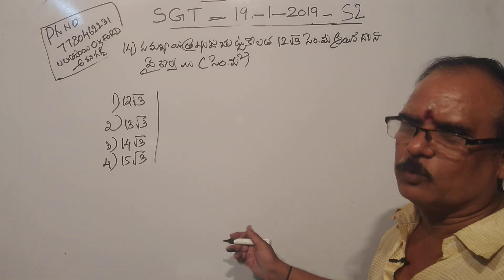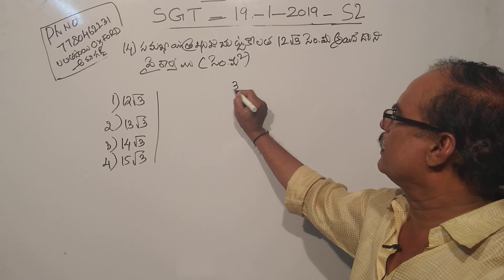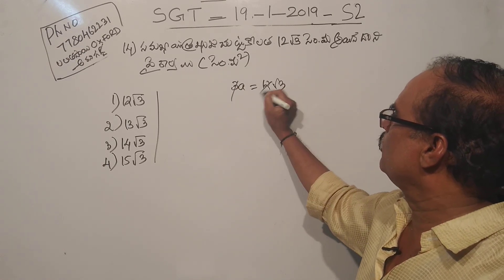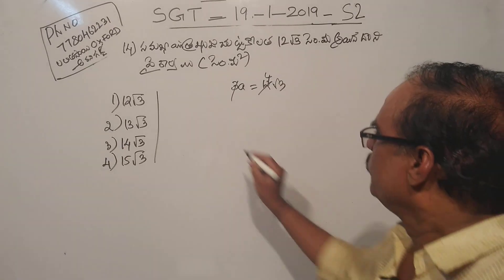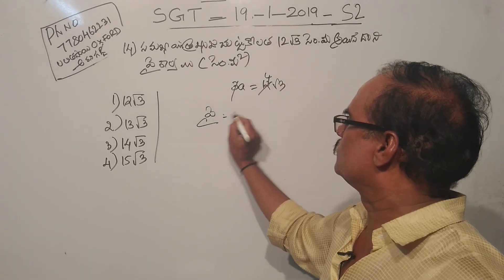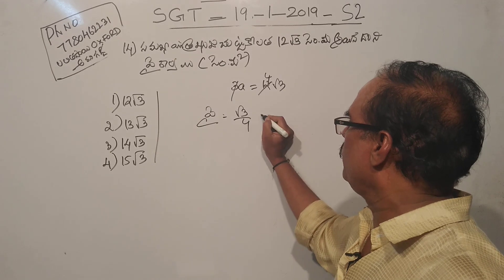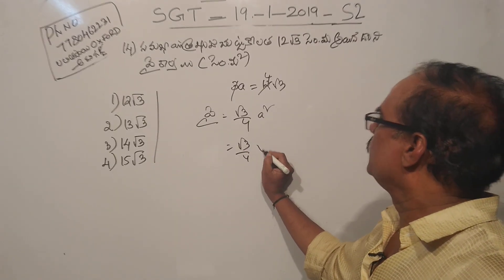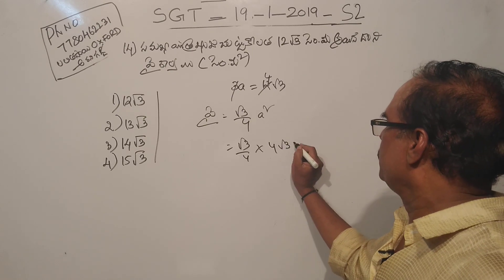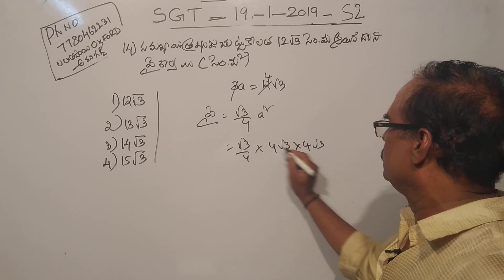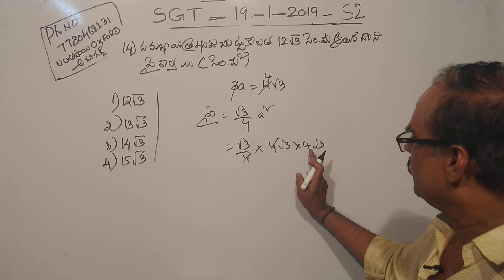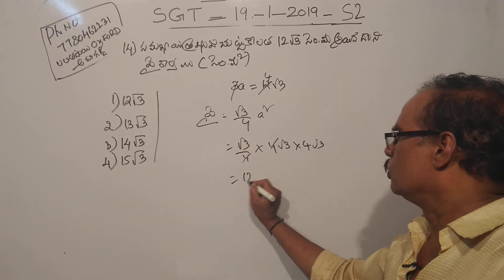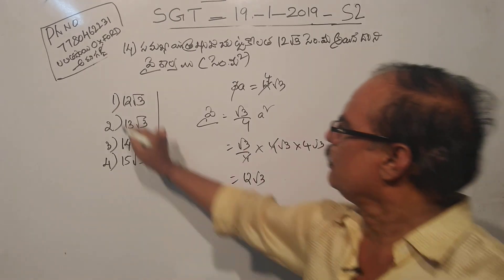Simple question: 3a is equal to 4 root 3. That is root 3 by 4, squared — 4 root 3 into 4 root 3. Root 3 into root 3, into root 3, into root 3 — so that is again 12.